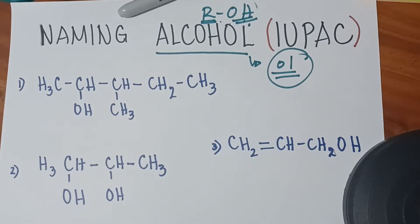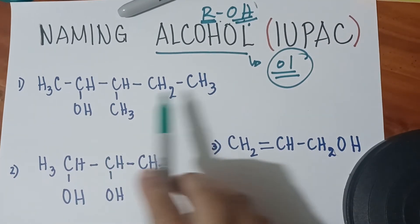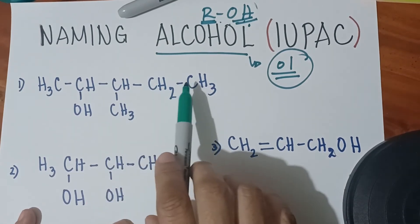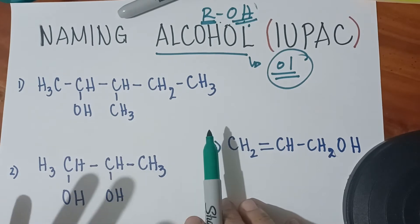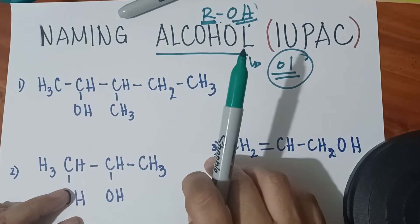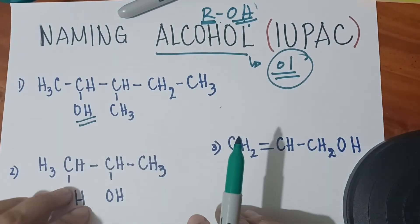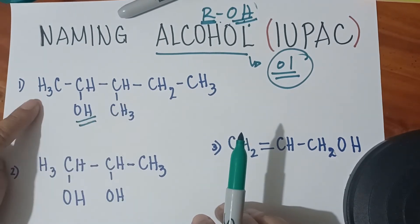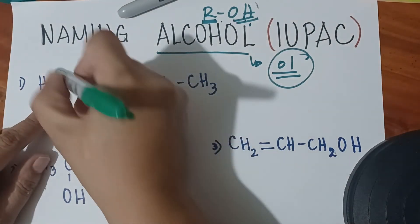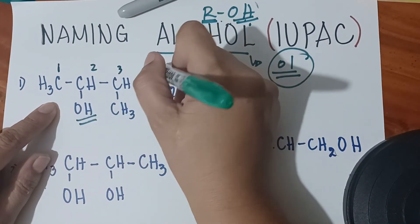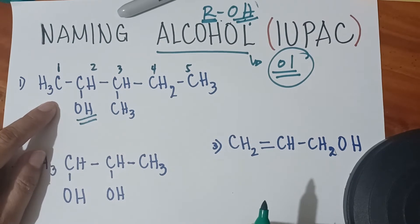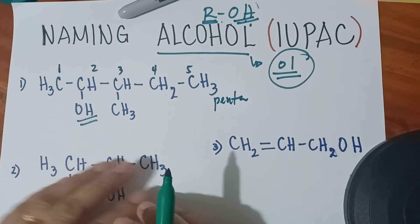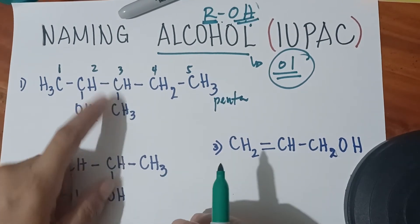Let us start naming the following examples. For this first one, we have to count the longest chain. As I said, start from the longest chain. The longest chain is one, two, three, four, five — so there are five carbons. Now next, we have to look where the OH is. Since the OH is here, we have to start counting from where the OH is located. The nearest carbon to the OH is on this side, so we start counting: one, two, three, four, five.